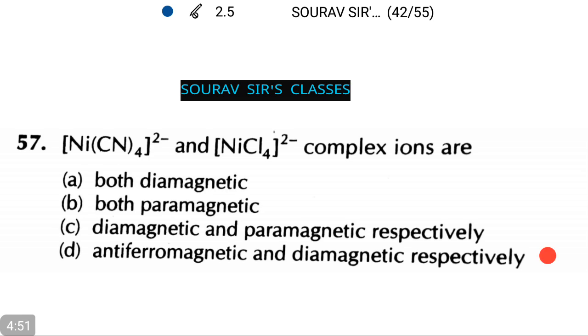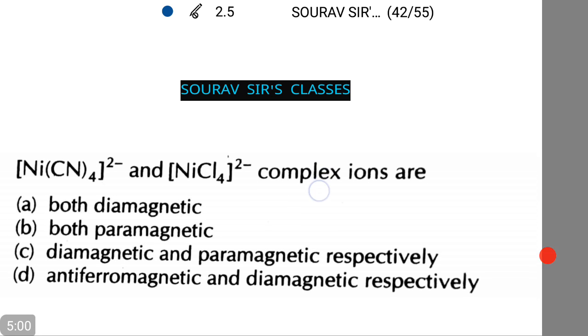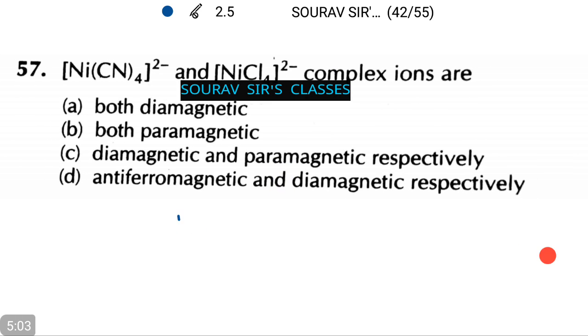We need to figure out each of these compounds are diamagnetic, paramagnetic or among the other options. The outer configuration of nickel is Ni = 3d⁸4s², Ni²⁺ = 3d⁸4s⁰. Now, we will see the electronic configuration of nickel chloride and nickel cyanide.